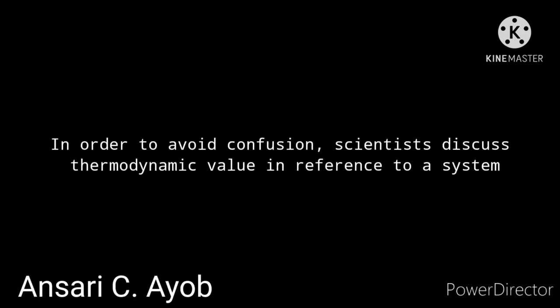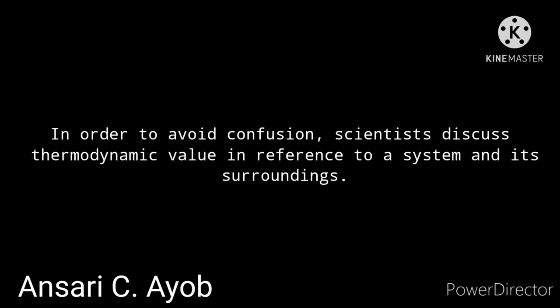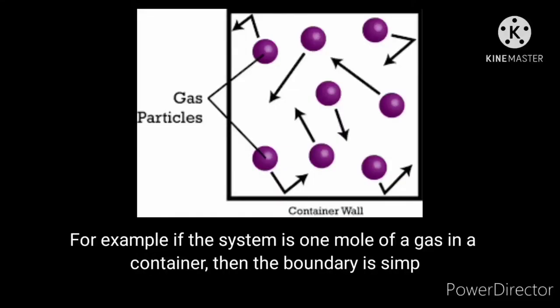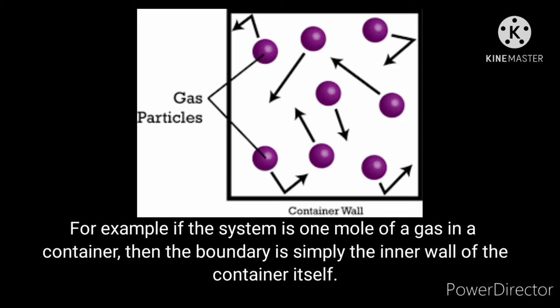In order to avoid confusion, scientists discuss thermodynamic values in reference to a system and its surroundings. Everything that is not part of the system constitutes its surroundings. The system and surroundings are separated by a boundary. For example, if the system is one mole of gas in a container, then the boundary is simply the inner wall of the container itself. Everything outside of the boundary is considered the surroundings, which will include the container itself. The boundary must be properly defined so one can properly say whether an individual part of the world is in the system or in the surroundings.